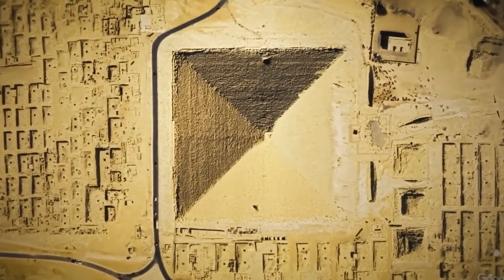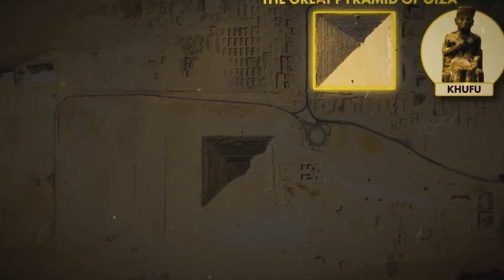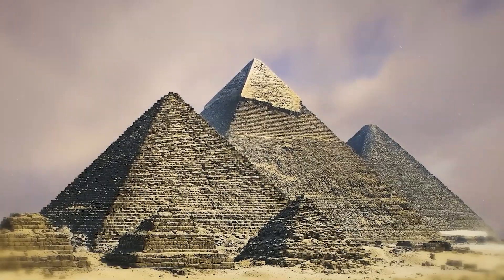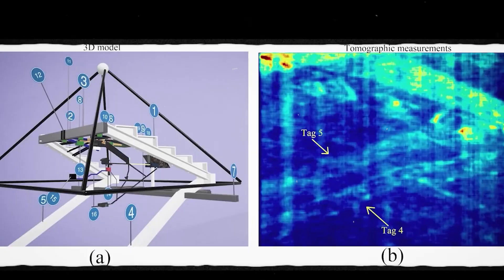At first glance, it might seem impossible that people without cranes or heavy machinery could move such massive stones, let alone place them with such precision. But over the years, historians and archaeologists have come up with several theories, backed by evidence, to explain how this was done.